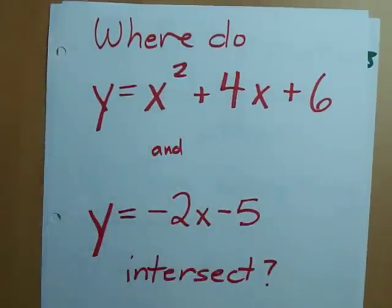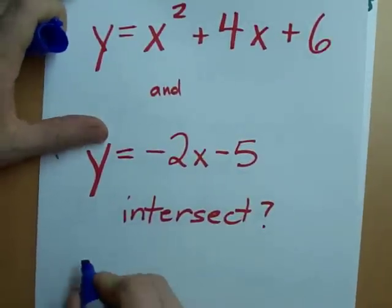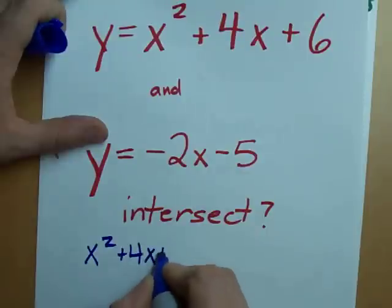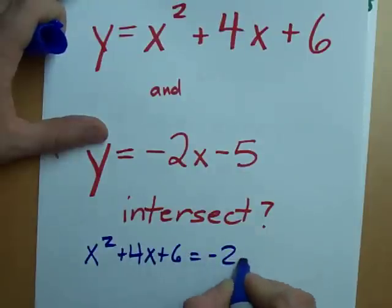Set the equations equal to each other is step one. So, all of a sudden we start with x squared plus 4x plus 6 equals negative 2x minus 5.